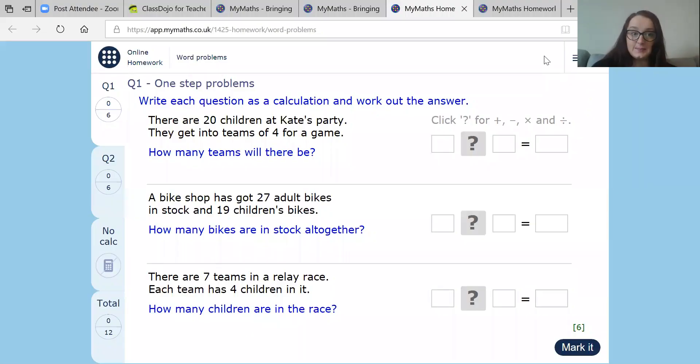So let's have a look at the other activity we'll be looking at. So on to the next MyMaths activity. And we are going to be looking at one step problems first of all. So it says, write each question as a calculation and work out the answer. So let's read the question first of all. There are 20 children at Kate's party. They get into teams of four for the game. How many teams will there be? So the 20 children. So we know we're at 20 first of all, because that's the larger number, isn't it? And they get into teams of four. So what I think they're going to do, they are going to be dividing. And we're going to be dividing by four. So now what we need to do, we need to figure out how many fours go into 20. So four, eight, 12, 16, 20, five.